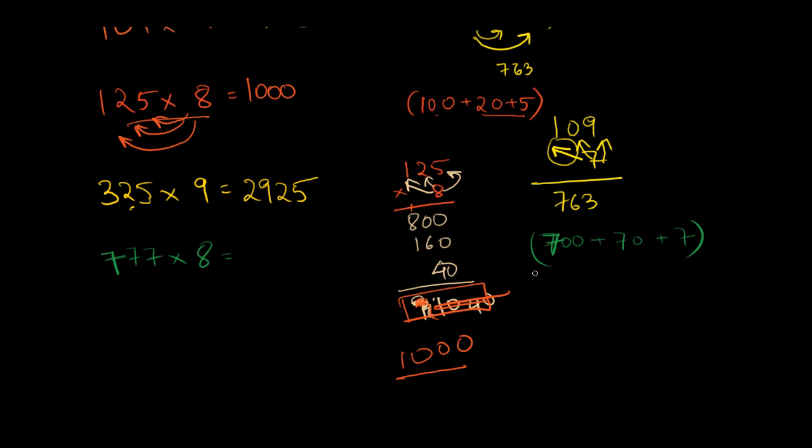Let me begin. I'll do 8 times 700. What is 8 times 700? It's 5600. Perfect. Yes, it's 5600 plus 560 plus 56.